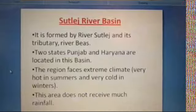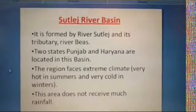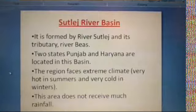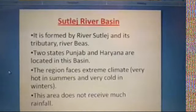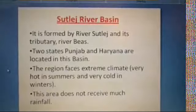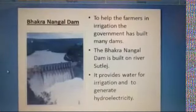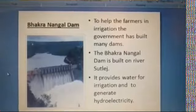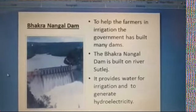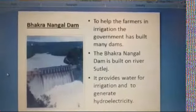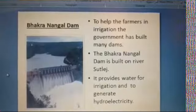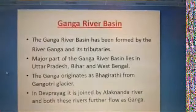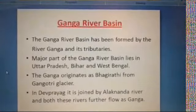The Sutlej River Basin is formed by the River Sutlej and its tributary, River Beas. The two states Punjab and Haryana are located in this basin. The region faces extreme climate — very hot in summers and very cold in winters. This area does not receive much rainfall. To help farmers with irrigation, the government has built many dams. The Bhakra Nangal Dam is built on River Sutlej and provides water for irrigation and to generate hydroelectricity.